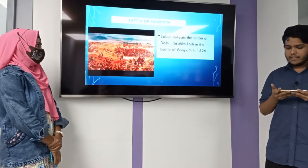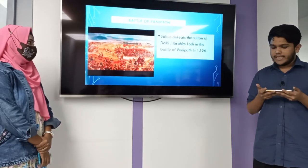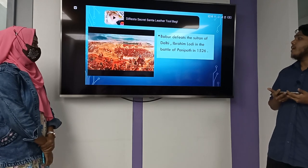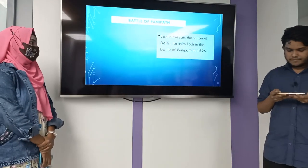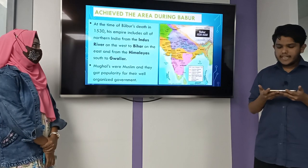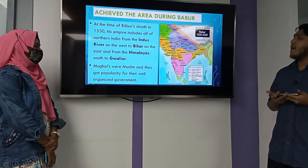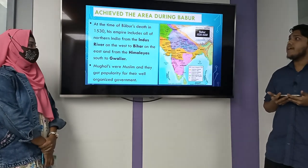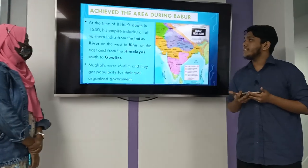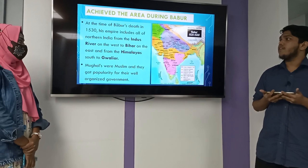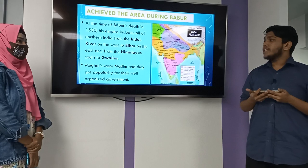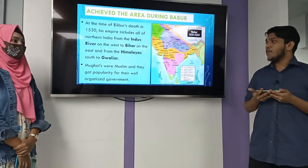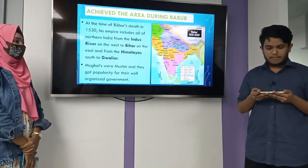Battle of Panipat: Babur defeated the Sultan of Delhi, Ibrahim Lodi, in the year 1526. At the time of Babur's death in 1530, his empire included all of Northern India from the Indus River on the west to Bihar on the east, and from the Himalayas south to Gwalior. The Mughals were Muslims, and they are noted for their well-organized government.